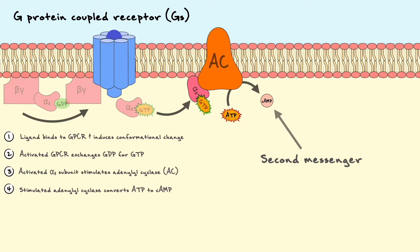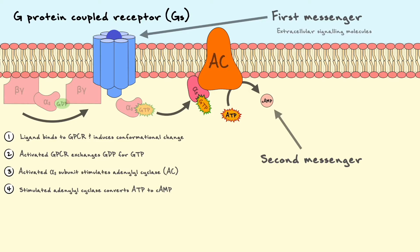By saying second messenger, it entails that there is a first messenger, and indeed there is. The first messenger is the ligand that binds to the receptor — the extracellular signaling molecule. Hence, we can define second messengers as intracellular signaling molecules. Second messenger is a fairly common term used in biology, and it covers a vast array of molecules like cAMP in this case, and later we will see other examples like calcium, IP3, and diacylglycerol. Due to the diversity of molecules and their downstream substrates, they have a diverse number of functions ranging from cell proliferation, differentiation, migration, survival, apoptosis, phosphorylation, depolarization, and so on.